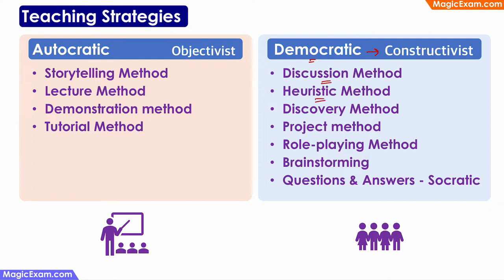In the heuristic method, the teacher gives a problem and encourages or guides students on how to solve it. Students do some research by themselves, experiment with various things, and arrive at a solution — but the teacher is guiding them so learners can actively participate. In the discovery method, the teacher just gives the problem and students find the answer by themselves. For example, if told that tomorrow we need to make a sandwich in class, students figure out how the sandwich will be made, what ingredients are needed, and where to get them. The key difference is that in the discovery method the teacher does not guide, whereas in the heuristic method the teacher actively guides.